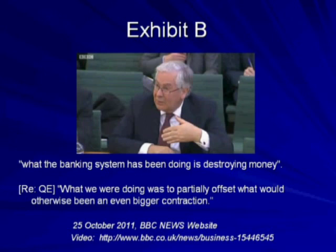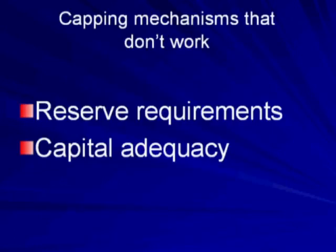Now I wish to address the commonly taught idea that there are mechanisms that put an upper limit on money creation: the so-called capital adequacy regulations and the reserve ratio limits. Let me assure you that neither of them work at all. They are rather like the regulations that supposedly compel multinational organisations to pay their fair share of taxes — we all know that these regulations are just too easy to sidestep. They are completely ineffective. What's more, the reserve ratio system doesn't even exist in many countries, including the UK. So if your university taught you a capping mechanism called the money multiplier model, you have been sadly misinformed — it is simply irrelevant junk.